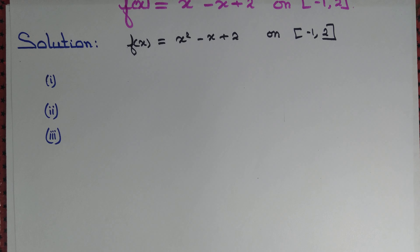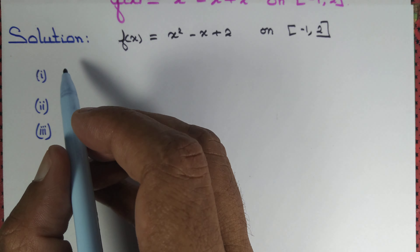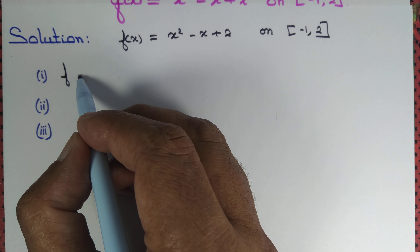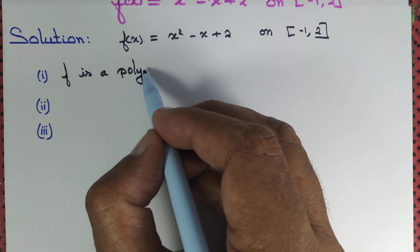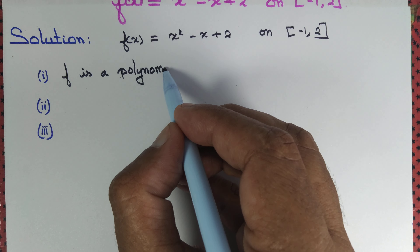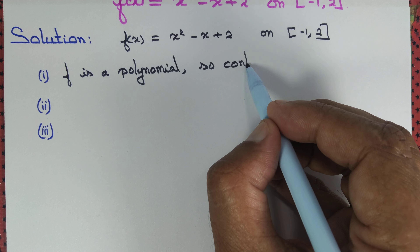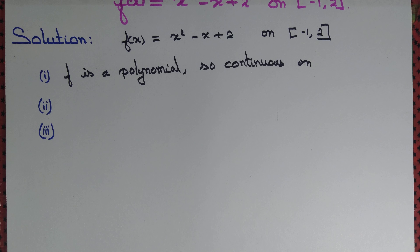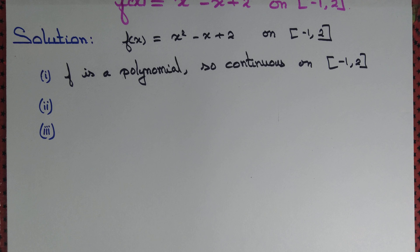To verify Rolle's theorem, we need to make sure that three criteria are satisfied. First: f is continuous. Observe that f is a polynomial, and polynomials are continuous throughout ℝ — so f is continuous on the closed interval [-1, 2].